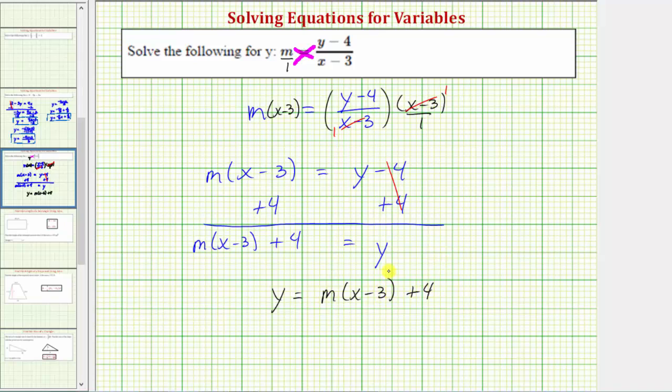Or, we could also distribute and say y equals mx minus m times three, so we'd have minus three m plus four. Either of these would be correct. I hope you found this helpful.